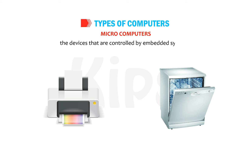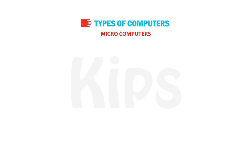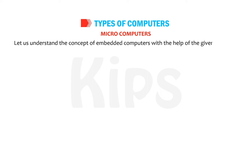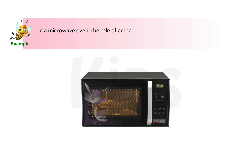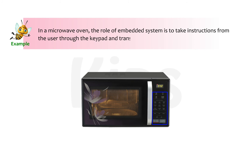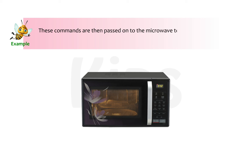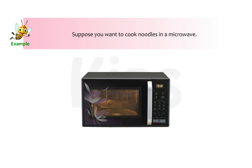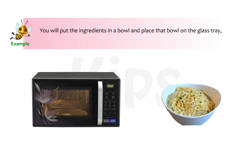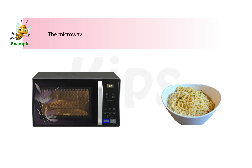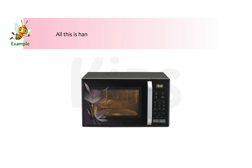Embedded systems are also called microcontrollers. In a microwave oven, the role of the embedded system is to take instructions from the user through the keypad and translate them into commands. These commands are then passed on to the microwave to obtain the desired output. For example, to cook noodles, you put the ingredients in a bowl, place it on the glass tray, set the timings and press the start button. The microwave stops as per the timings set, all handled by the embedded computer.